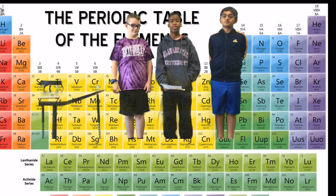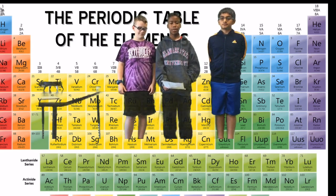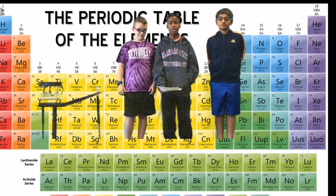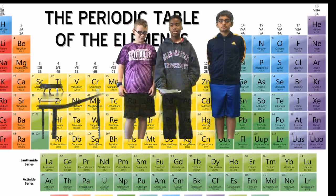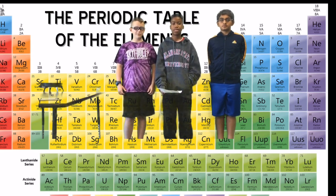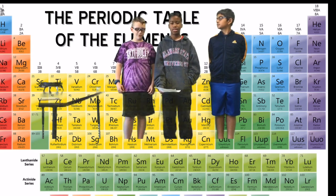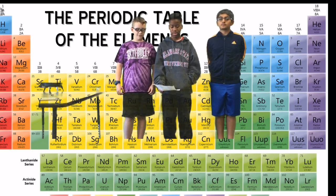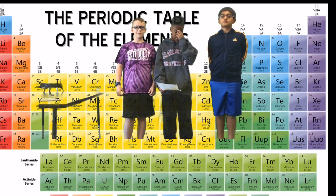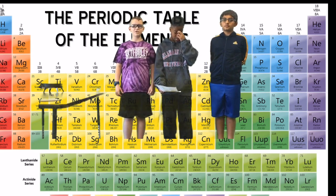Elements have two forms: their physical form and their chemical form. Only a few elements, like gold, can be found in pure form. In physical form, they can be studied without being changed.